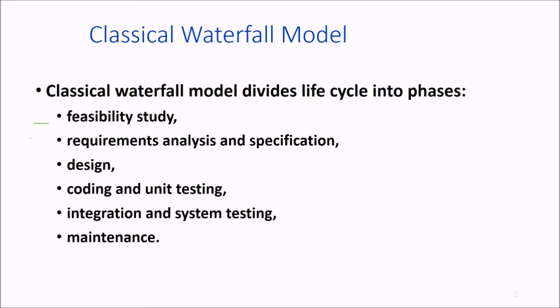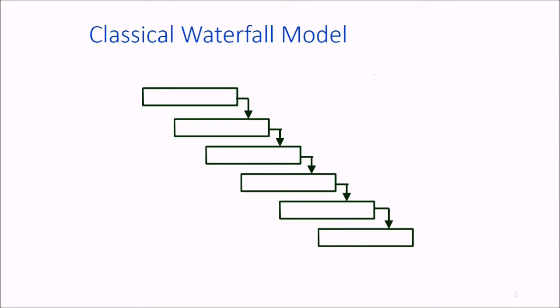The first phase in classical waterfall model is feasibility study, then requirements analysis and specification, followed by design, then coding and unit testing, integration and system testing, and finally the maintenance part. The waterfall model has extracted its name from similarity between an actual waterfall in real life and its workability. Water is falling and cannot go back because of gravity. This shows that requirement analysis cannot be redone if we are on design phase. Requirement analysis is once for all done.